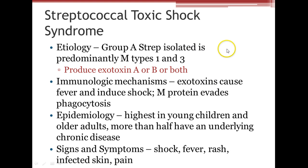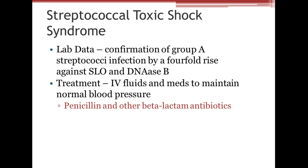Streptococcal toxic shock syndrome is another complication. The etiology is group A strep, predominantly M types 1 and 3, which can produce an exotoxin. Exotoxins cause fever and induce shock, and the M protein can evade phagocytosis, making it difficult to treat. It is highest in young children and older adults, and more than half have an underlying chronic disease. Signs and symptoms include shock, fever, rash, infected skin, and pain. Lab confirmation requires a four-fold rise against SLO and DNA B. Treatment includes IV fluids and medications, usually penicillin or another beta-lactam antibiotic.